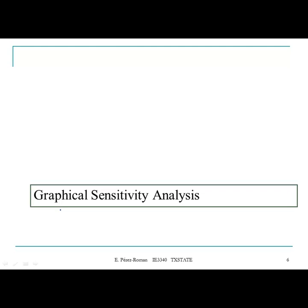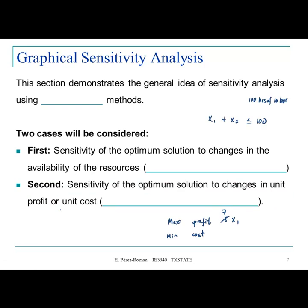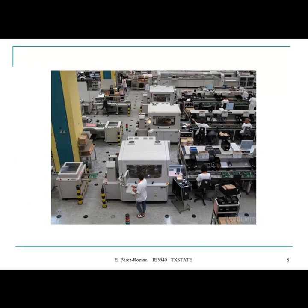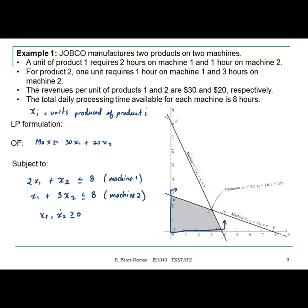Last week, we started with the material for sensitivity analysis. We're going to talk about two different ways: the graphical solution or graphical sensitivity analysis, and also the algebraic method for sensitivity. We look at the first part — basically, we were looking at how the right-hand side of the constraints, once you change those values, affects your optimal solution. We look at the Jotko manufacturer example, which had two products and two machines, with constraints in terms of capacities.